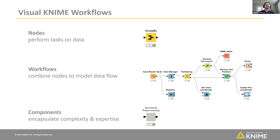Something else that KNIME offers is something called a component. A component is a way to encapsulate different nodes — basically wrap them up into a single node, kind of like a function in a programming language. For example, in text analytics, inside of a component I might have things like stop word filtering or tagging. The idea is that I can encapsulate this and reuse it later so that I'm not constantly reinventing the wheel when building workflows.